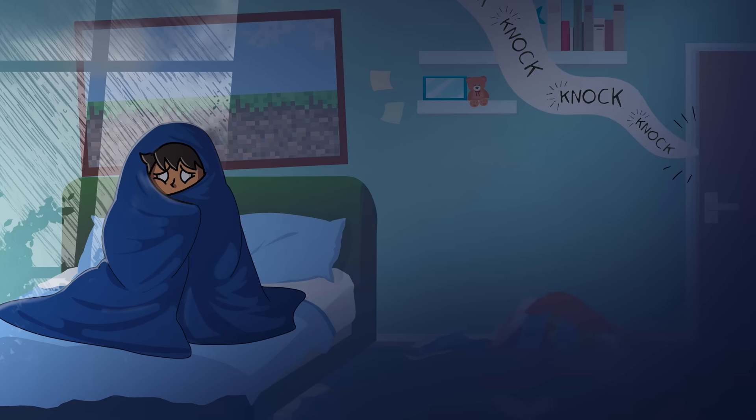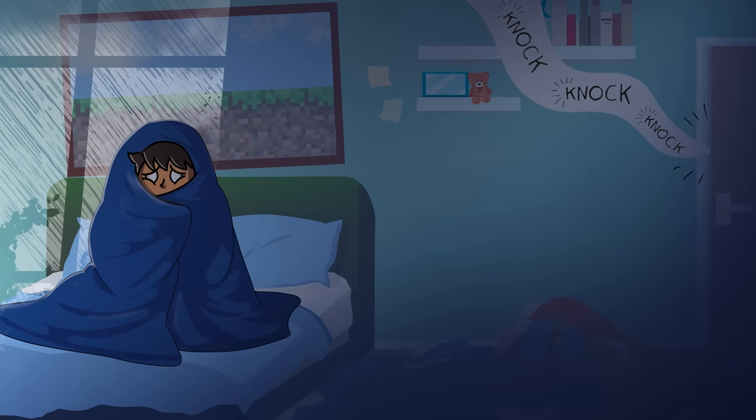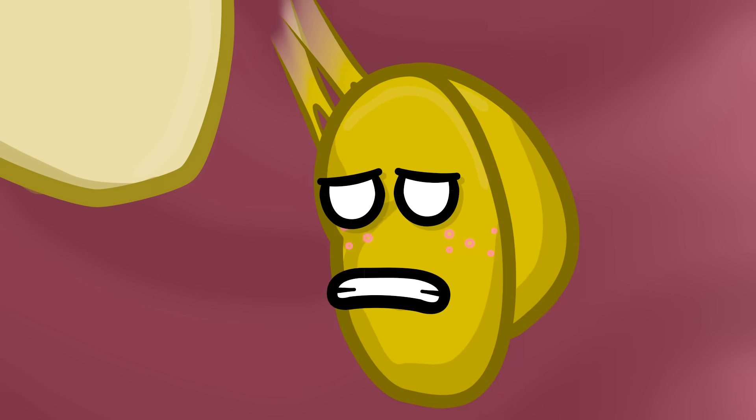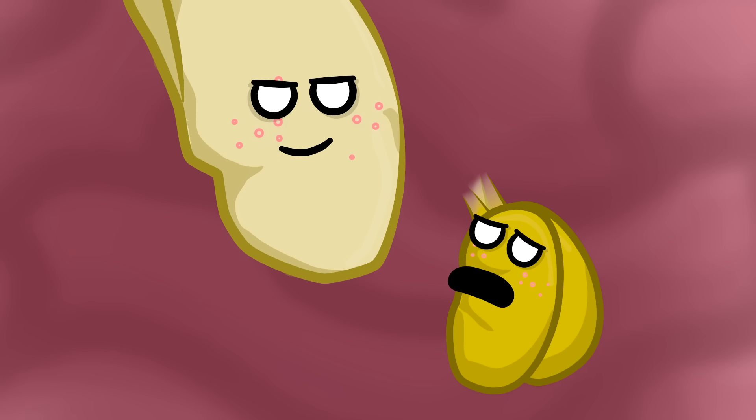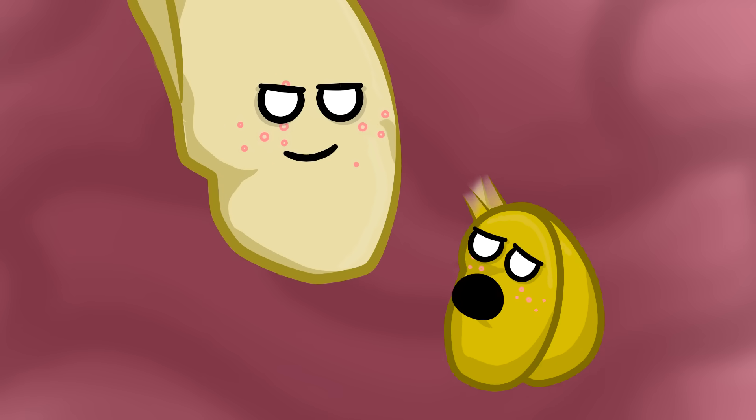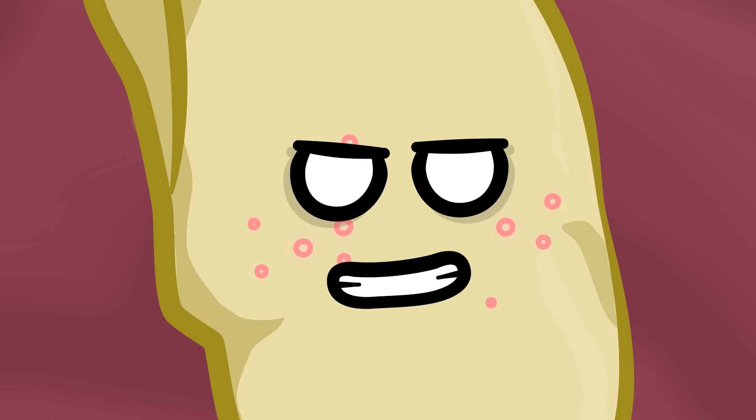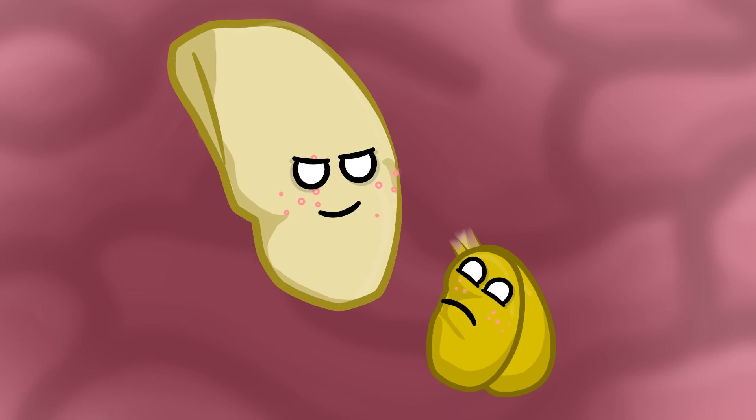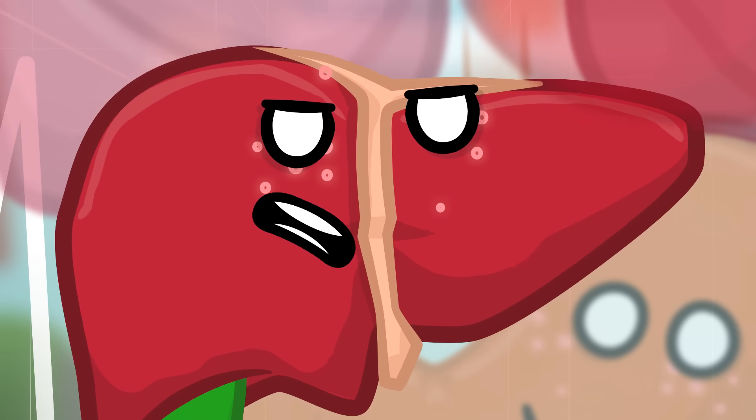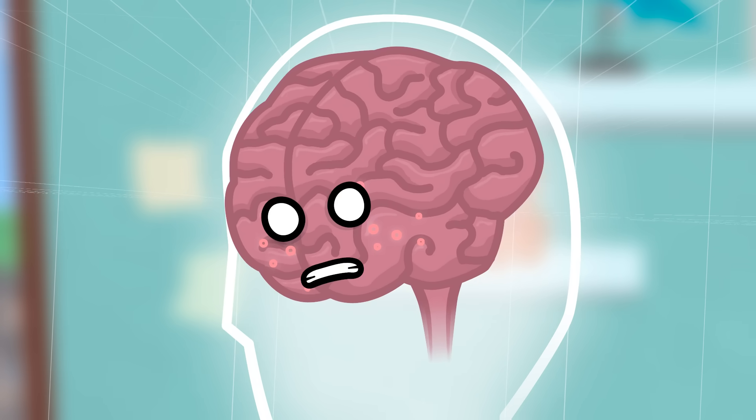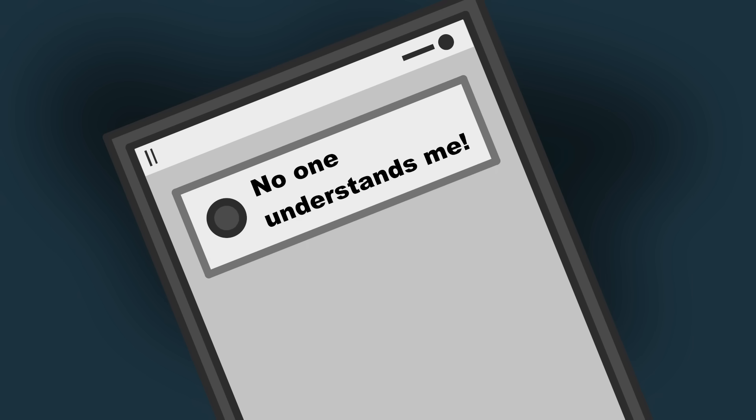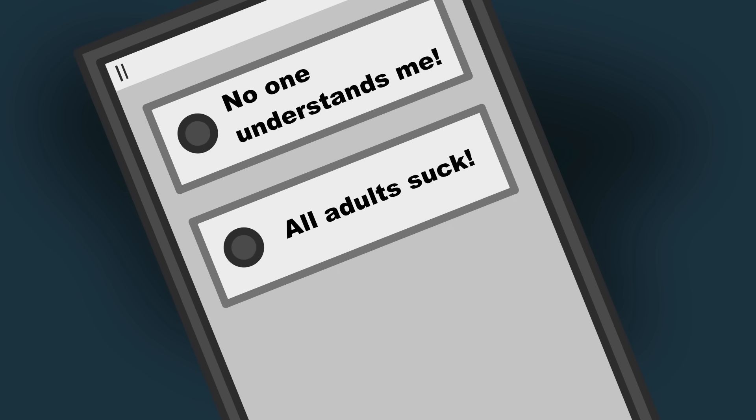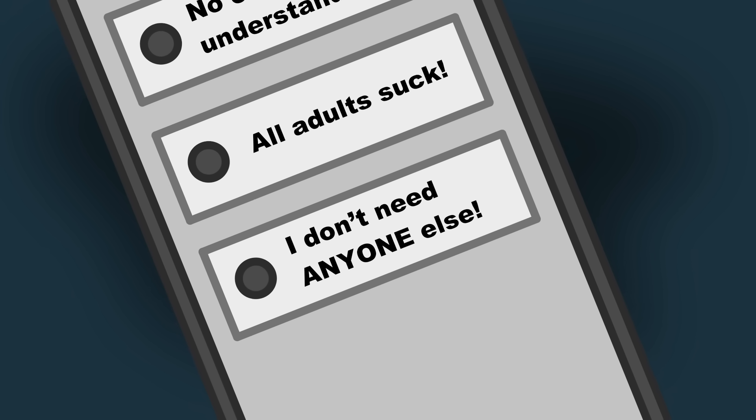Honey? Honey, are you alright? Go away, Mom! Oh, I knew they weren't ready for this! Hypothalamus, isn't there a way to reverse all this? Nope, no turning back now! But something terrible could happen! It's all a part of growing up! Brain, we really should stop being mean to Mom and apologize! Shut it, liver! I'm busy! No one understands me! All adults suck! I don't need anyone else!